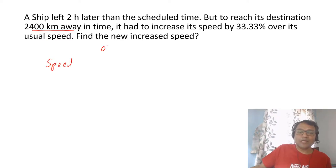That means the ratio of the old speed to new speed will be 3 is to 4. It's increased by 33.33%, increased by one third, so the new speed is 4 by 3 times. If I say old speed is 3, the new speed is 4, the ratio.